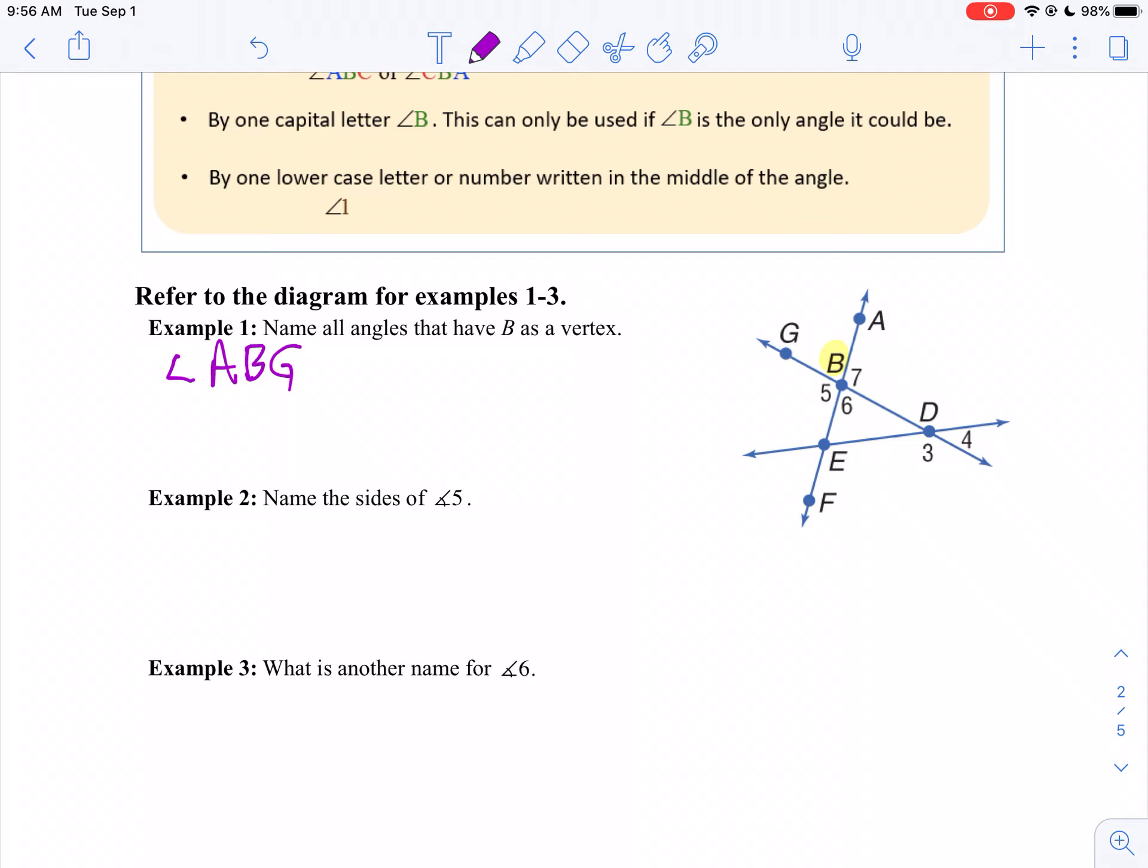You will notice sometimes I put an arc on my angles. That makes sure it looks like an angle and not a less than sign. Now let's keep on going around. Let's go angle ABD. So angle ABD would be another angle with B as a vertex.